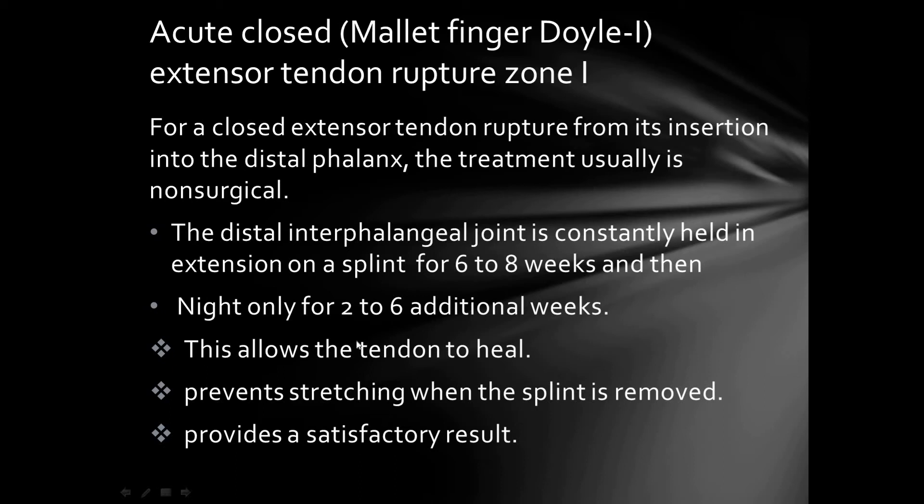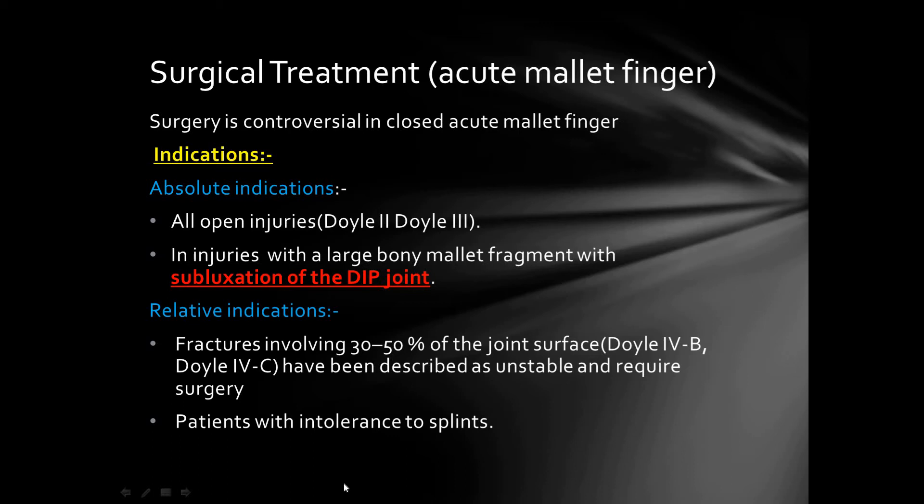For acute closed extensor tendon rupture — soft tissue mallet finger — the treatment is distal interphalangeal joint splinting for six to eight weeks, followed by night splinting for two to six weeks. This allows the tendon to heal, prevents stretching when the splint is removed, and provides satisfactory results.